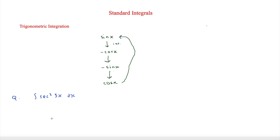This is a trigonometric identity. We know that tan x differentiates to give sec squared x, so sec squared x integrates to give tan x plus c. When integrating sec squared 5x, we get one fifth tan 5x — the one fifth comes from dividing by the 5, by inspection — plus c.